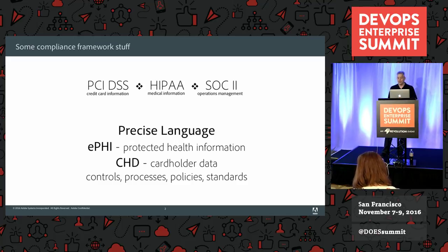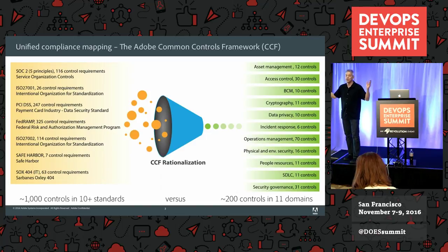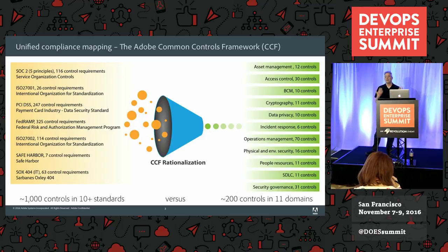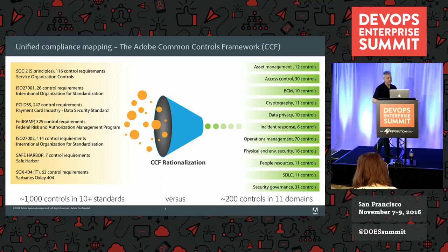There are a lot of controls, but you'll find there are a lot of common elements between them. Adobe did something really helpful a number of years back — we took all the frameworks we wanted to comply with, extracted all the controls, re-sorted them, de-duplicated them, and created one control that would address the controls in each body of frameworks. We call this the Common Controls Framework, the CCF, and it's a method of unified compliance mapping. Now I can build one change control system and know it'll pass SOC and PCI and all the others.